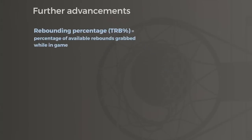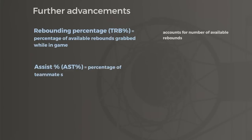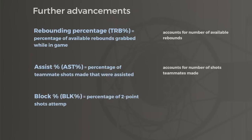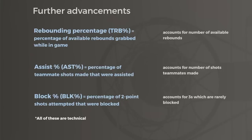Similar adjustments were made to other stats too. Assist percentage takes into account how many shots a player's teammates actually made. Block percentage is a rate of blocking two-point shots only, an adjustment that puts rim protectors on a more even playing field, regardless of how many threes the opponent shot against them.